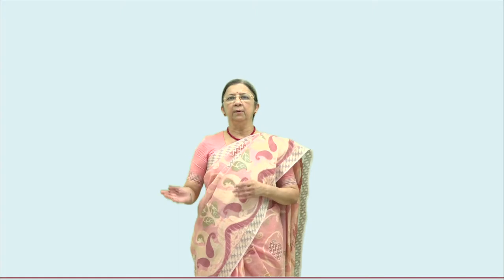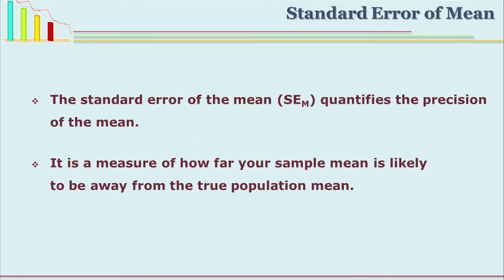When the researcher is interested in inferring from the statistics about the parameters — about the population — we must know if there are any errors. For means, if you want to infer from sample mean about the population mean, we must know a concept called the standard error of mean. The standard error of the mean, written as SE of mean or SEM, quantifies the precision — meaning accuracy — of the mean.